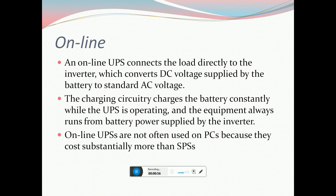An online UPS connects the load directly to the inverter, which converts DC voltage supplied by the battery to standard AC voltage. The charging circuit charges the battery constantly while the UPS is operating, so the equipment always runs from battery power supplied by the inverter. Online UPSs are not often used for PCs because they cost substantially more than SPS units.